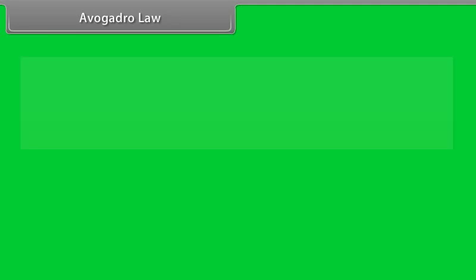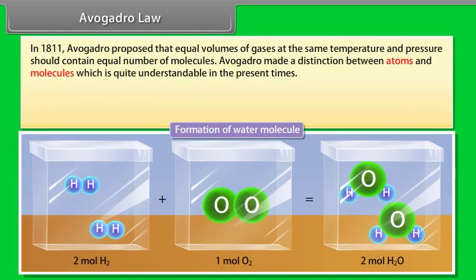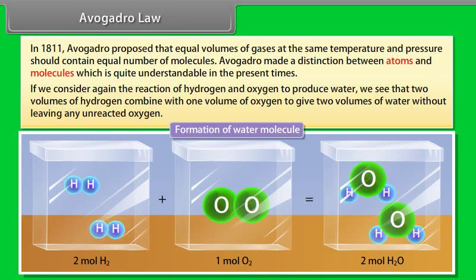Avogadro's Law. In 1811, Avogadro proposed that equal volumes of gases at the same temperature and pressure should contain equal numbers of molecules. He made a distinction between atoms and molecules. Considering the reaction of hydrogen and oxygen to produce water, two volumes of hydrogen combine with one volume of oxygen to give two volumes of water without leaving any unreacted oxygen.